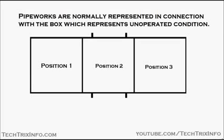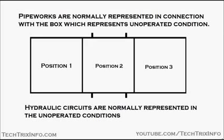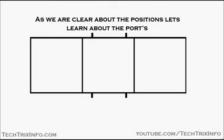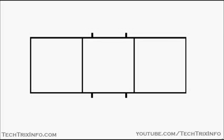The pipework is normally represented in connection with the box which represents the unoperated condition. Here, the unoperated condition is position two, where all the ports are blocked. Hydraulic circuits are normally represented in the unoperated position, which is position two, and those are the pipework connections.